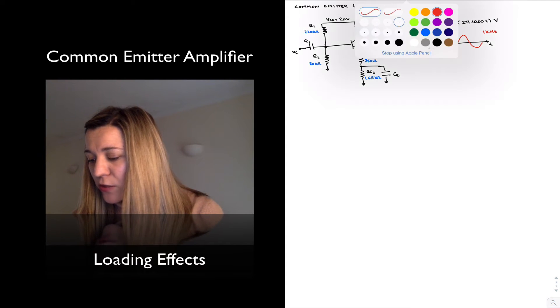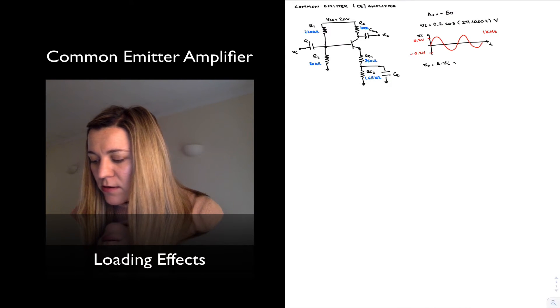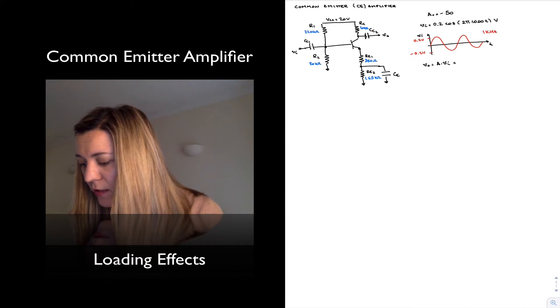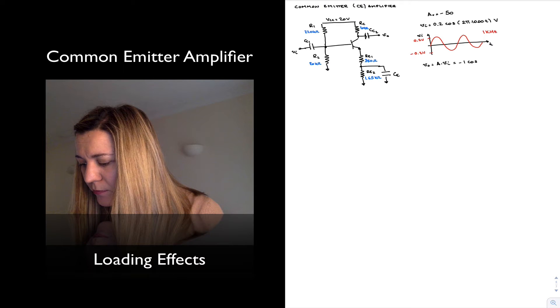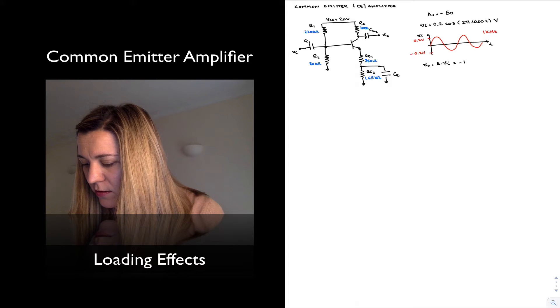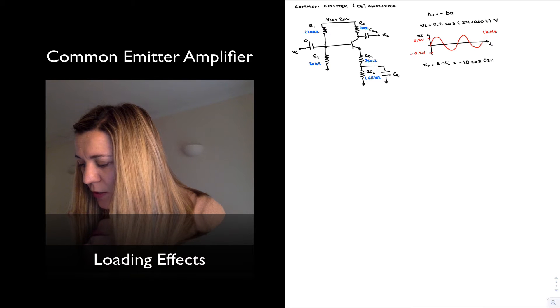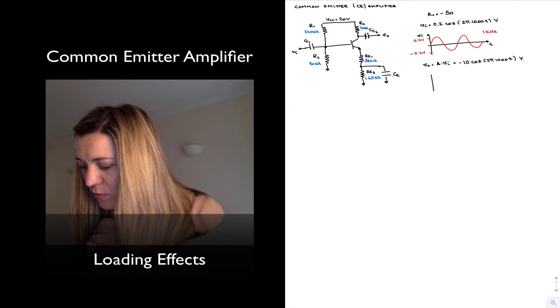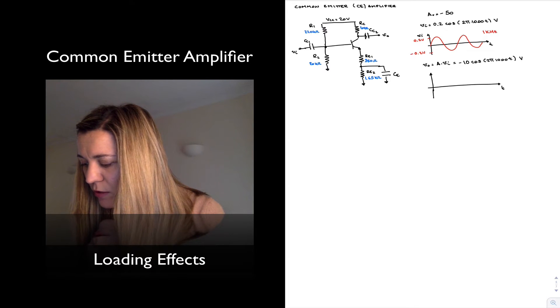What I expect to see for my output is negative 50 times 0.2, which will be negative 10 times the cosine of 2 pi 1,000 T volts. And so the important thing to notice is that it is inverted with respect to the input signal.